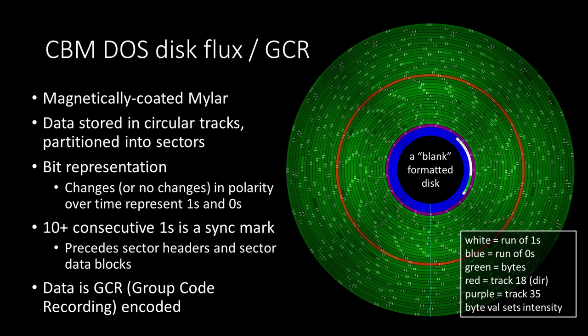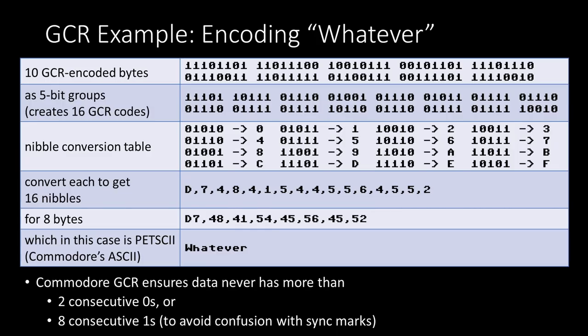Thank you to Jim Drew, who built this disk image visualizer tool. You can see white colors as runs of ones, and green shows the byte value from 0 to 255 by intensity. That red track is track 18 — a special track on Commodores for where the directories are stored. GCR encoding was how a lot of magnetic media was encoded back in the day. I'm going to encode the word 'whatever' — I break the GCR bytes into 5-bit groups, each convertible to a nibble, and those nibbles come together to make bytes.